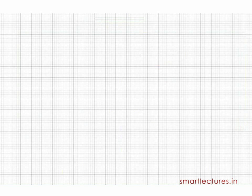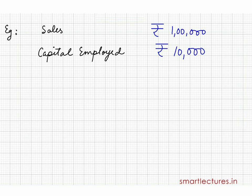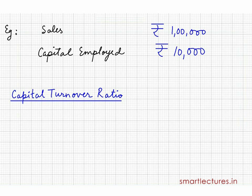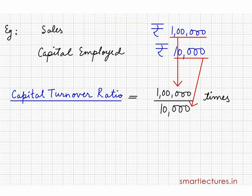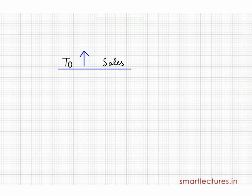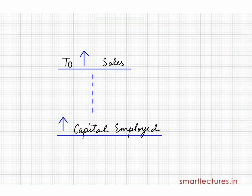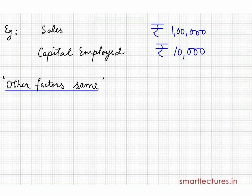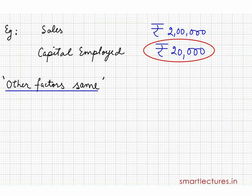Suppose in a company the sales for the year are rupees 1 lakh and the average capital employed during the year was only rupees 10,000. So capital turnover ratio will be 1 lakh upon 10,000, which equals 10 times. This means the available capital employed can generate 10 times sales. If you want to increase the sales, you will have to increase the capital employed. If other factors remain the same — if you want to increase sales from 1 lakh to 2 lakh, you will have to increase capital employed from 10,000 to 20,000 rupees.